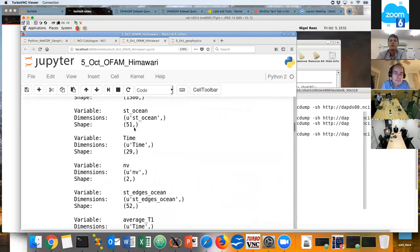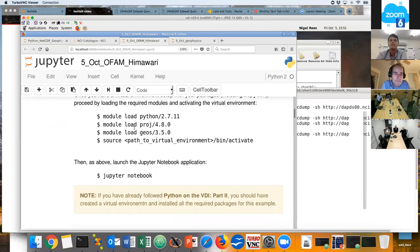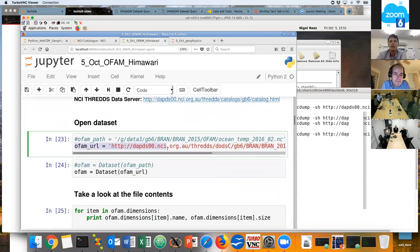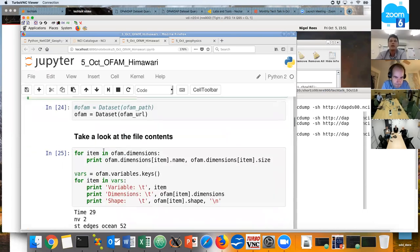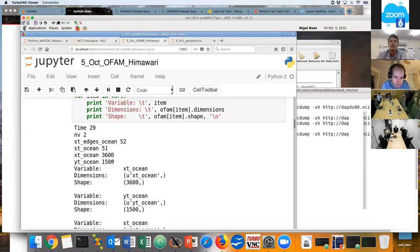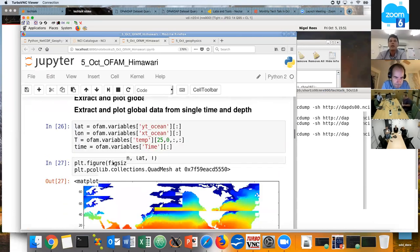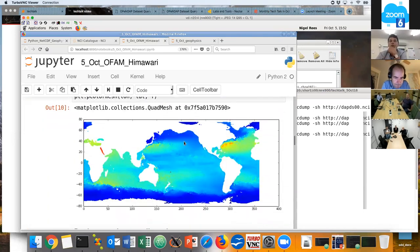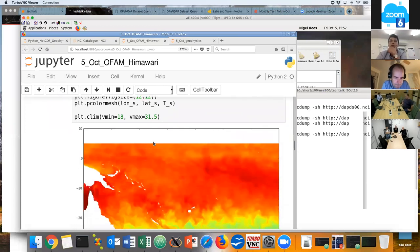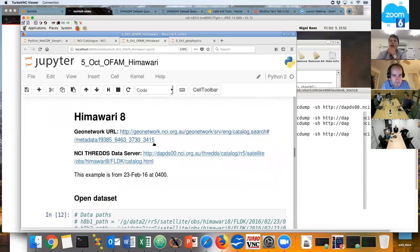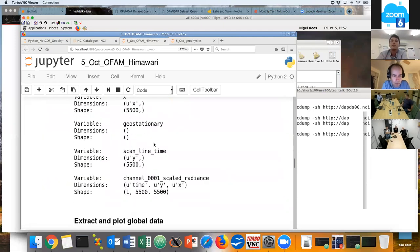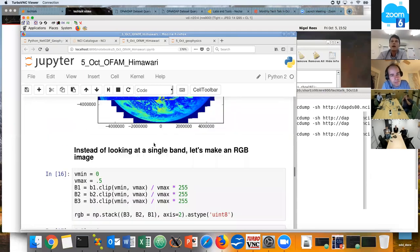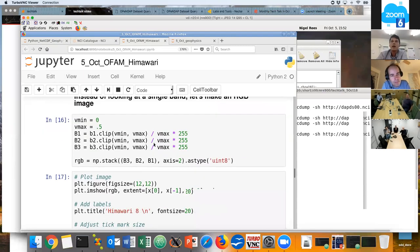This is one using ocean forecasting data and satellite data. Once again, we just grab the OpenDAP URL, open it up using the dataset command, and we can view the metadata and extract and plot data. Here are just some examples. We can do the same for a small subset once again. We can do the same with some satellite data.